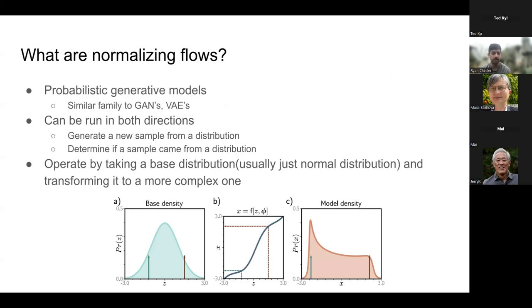Starting off, answering the question of what are normalizing flows. They're probabilistic generative models. Last week we talked about GANs and a little bit about VAEs, so those are kind of related in that family. The interesting thing about normalizing flows is that they can be run in either direction. You can go in the direction of generation, trying to generate a new sample from a distribution, but then you can also flip it the other direction and say, is this image part of that initial distribution?